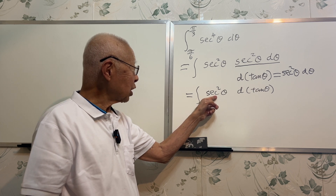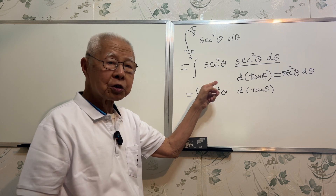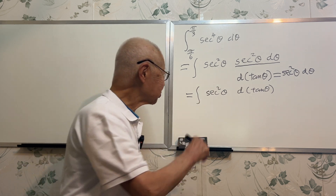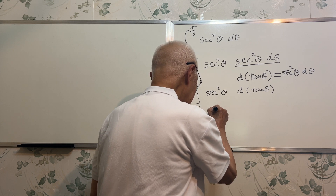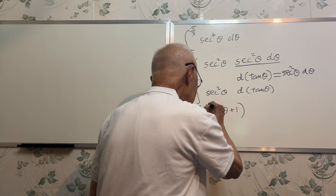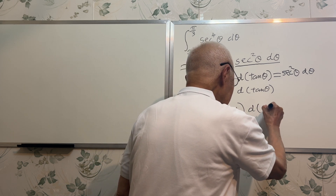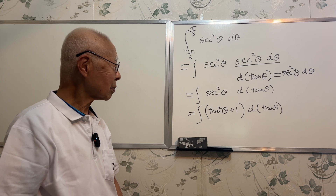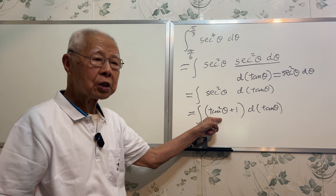Then we need to use an identity: secant squared theta is equal to tangent squared theta plus 1. From here to here is to use the trigonometric identity.